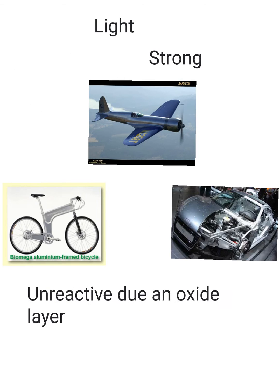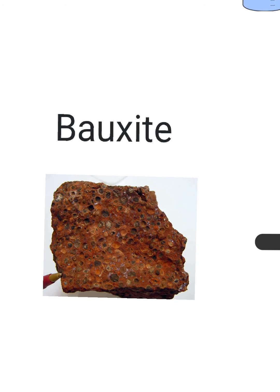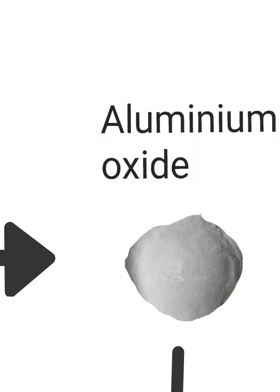It's also unreactive due to an oxide layer, so it wouldn't necessarily react to water and hence you can use it in foil to wrap food and so on. It's extracted from an ore called bauxite which contains the ionic substance aluminium oxide.